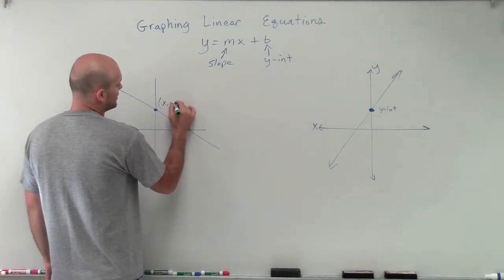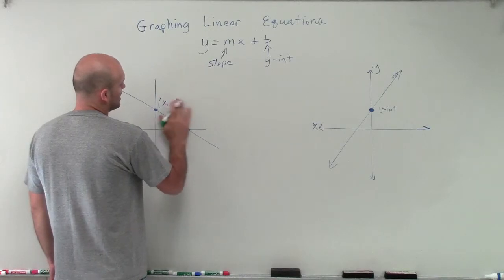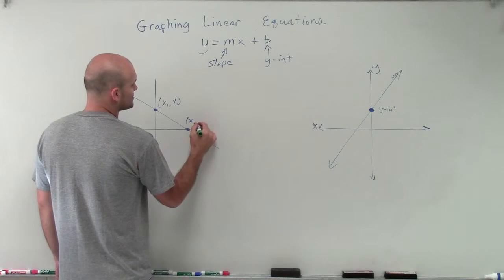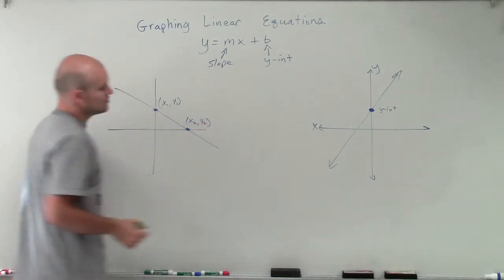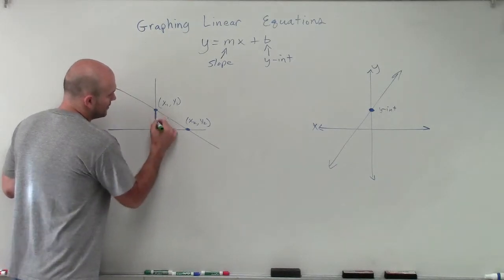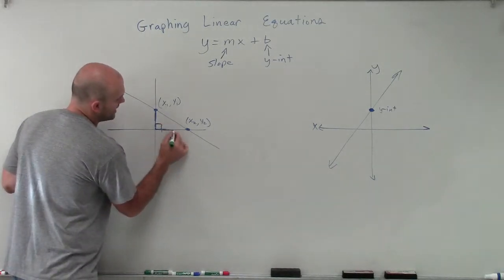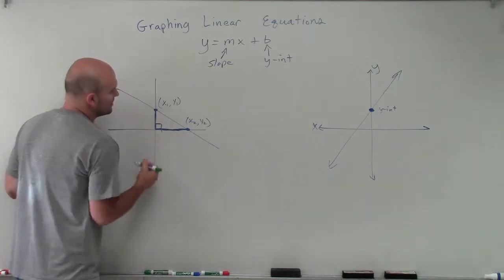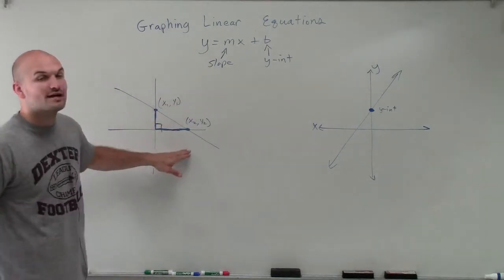So we had an x-coordinate here. Let's call these x1 and y1, and then we had another point, x2 and y2. When we were talking about the slope, what I like to do is create a slope triangle. That slope triangle was the right angle triangle that found the difference between my two points.